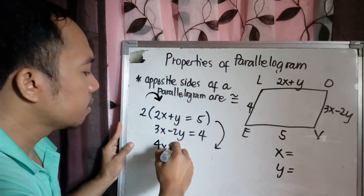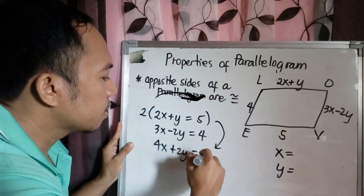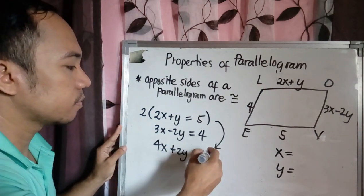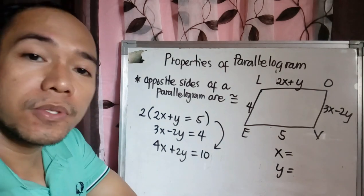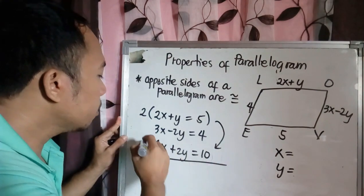So this becomes 4X plus 2Y equals 10. Now using elimination method, if you're going to add the terms, this will become zero. Negative 2Y plus 2Y equals zero.